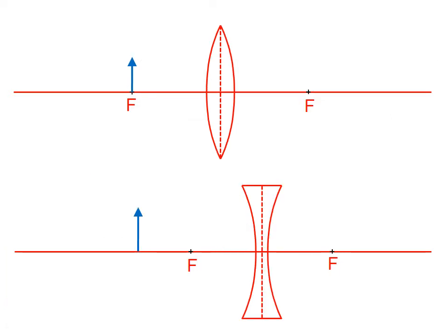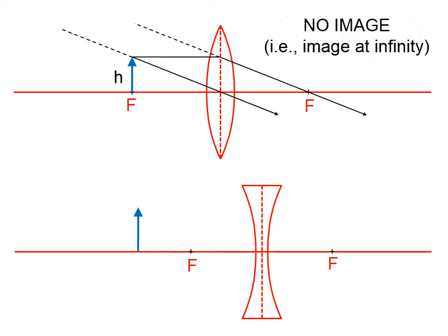Now we have an object that is at the focal point with a converging lens. Rule number one says go in parallel and refract through the focal point. Rule number two says line up the top of the object with a focal point and come out parallel — that's not going to work well here. So we use rule number three, which says head towards the center of the lens and keep going. These two rays will not intersect and their projections will not intersect; therefore we get no image. With a converging lens, when your object is at the focal point, you get no image.